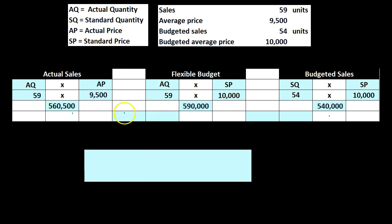Now we're going to take the difference of $590,000 minus $560,500, that being $29,500. Note what we're comparing here: the AQ quantity is held constant, and the thing that changes is what we're concentrating on — the AP (actual price) and the SP (standard price). The standard price, what we budgeted to happen, is higher than the actual price. In cases of sales, we want the price to be high because we're selling the thing and that means our income is higher. So that's unfavorable — we sold them for less than we had budgeted to sell them for.